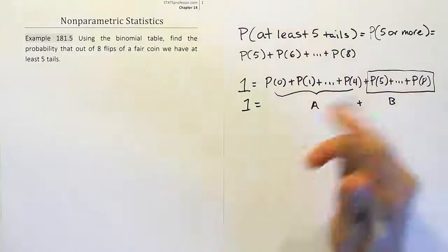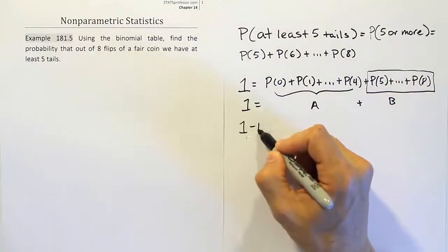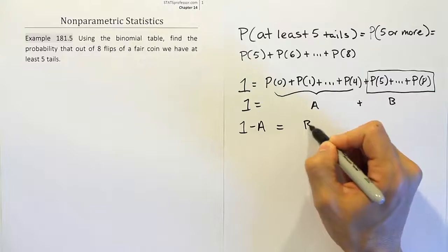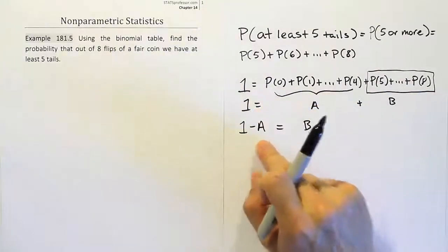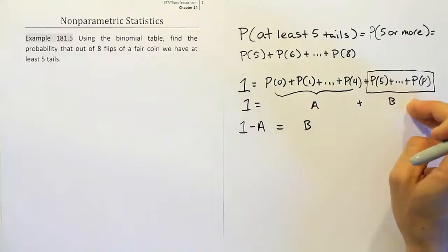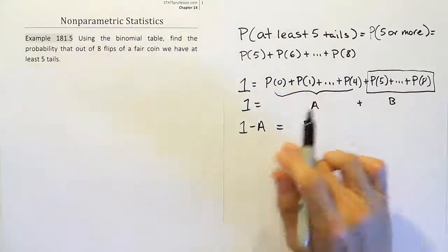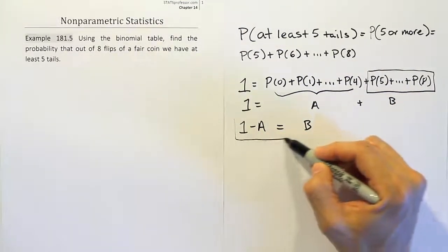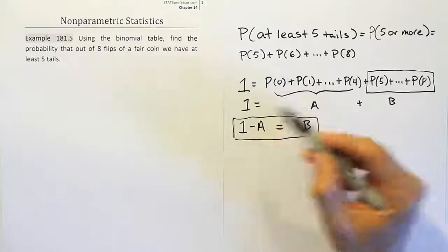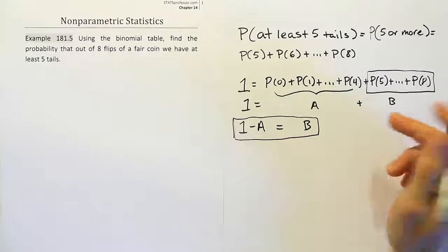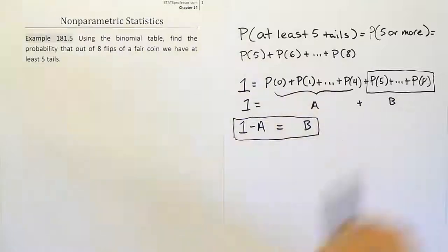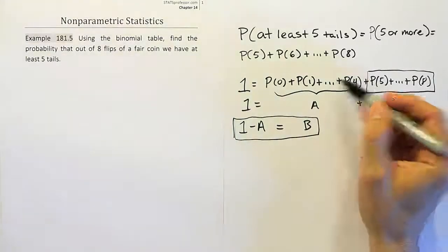So if I'm looking for B, I can just do what? One minus A is equal to B. Does that make sense? If I subtract A from both sides, we'll get one minus A here. The A here would disappear and just leave me with B. So one minus A equals B is what I need to do here. I need to figure out, in other words, what A is so that I can subtract it from one to figure out what B is. That's the logic here.